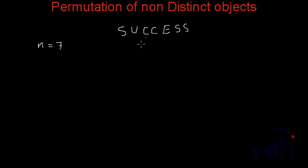So in this case, how many total permutations are possible? The word length is 7 only. So if we have 7 places and we have 7 objects, total number of permutation, that is nPn, will actually be 7 factorial in this case.